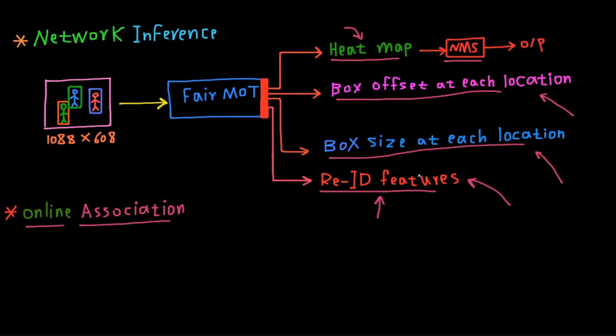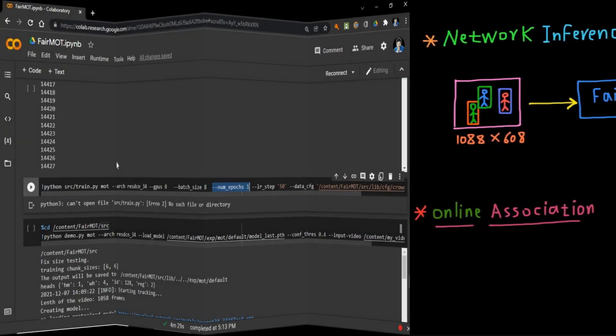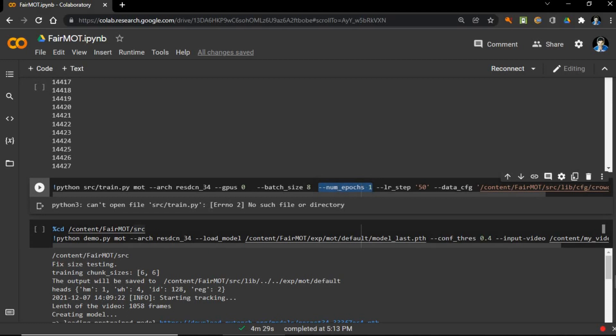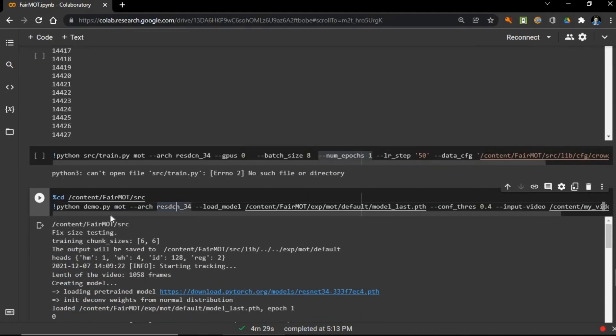Now let's go to Colab and see the performance of our pre-trained FairMOT model on test video. As you can see here, I trained FairMOT model for only one epoch. Try to increase the number of epochs and the results will be better than what I have.